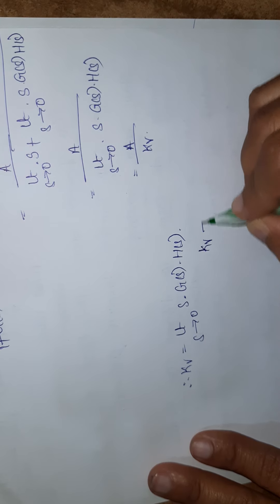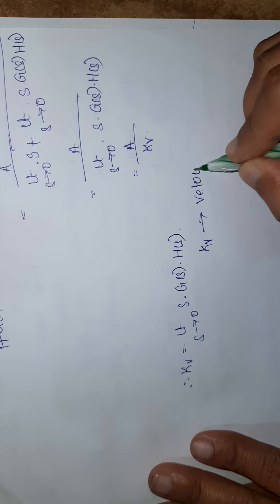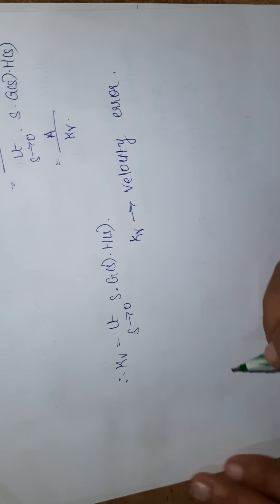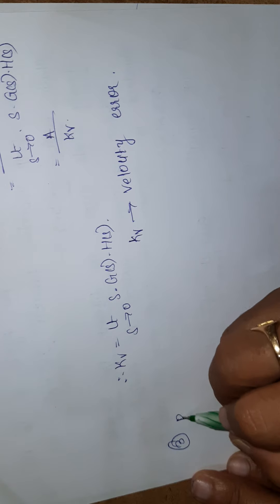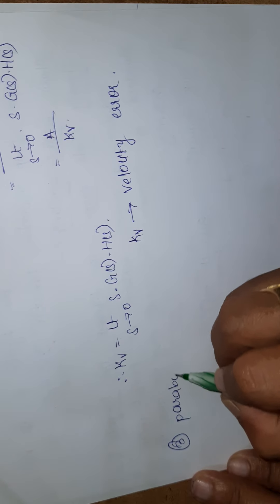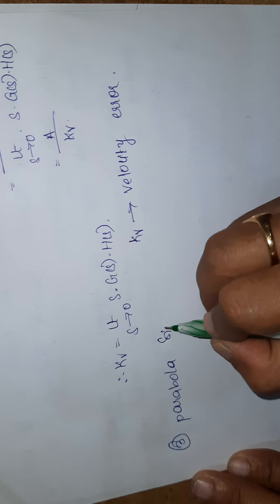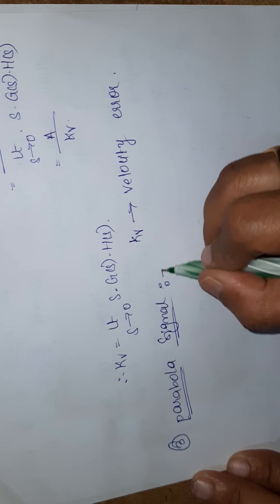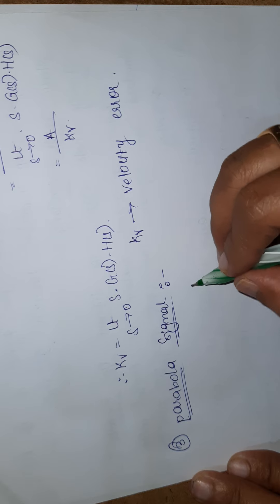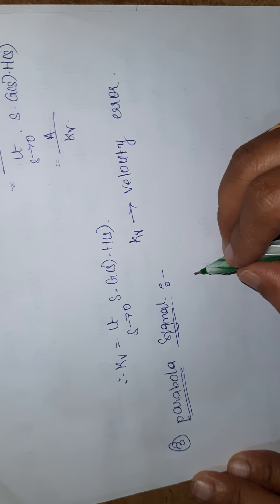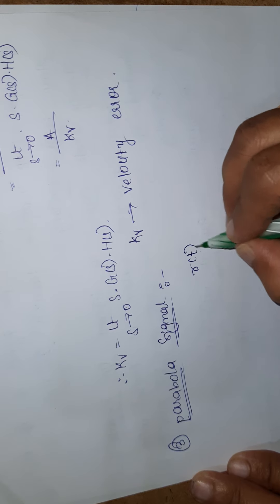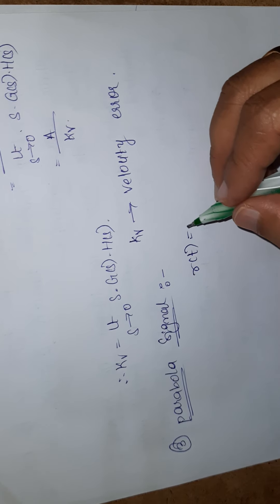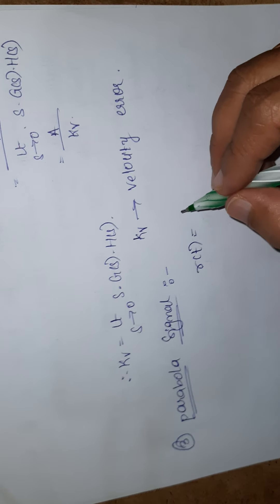K_v is known as the velocity error constant. The third input is the parabola signal. For the parabolic signal, R(t) = A·t²/2, which in the s-domain is R(s) = A/s³.